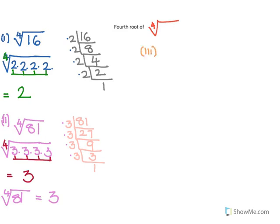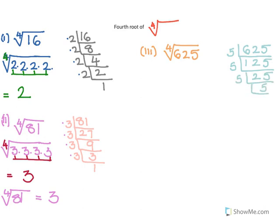For the third sum we have fourth root of 625. On short division, we get five 5s: 5, 5, 5, 5, and 5. So fourth root of 625 gives 1, 2, 3, 4 fives. Because it is a fourth root, we make groups of 4: 1, 2, 3, 4 — so this is equal to 5. Therefore, fourth root of 625 equals 5.